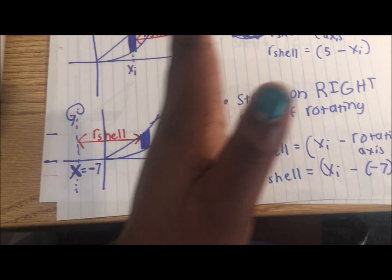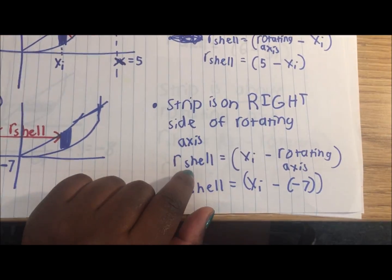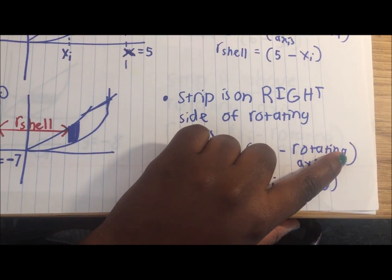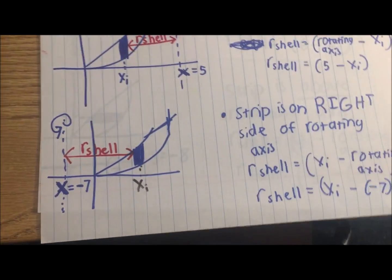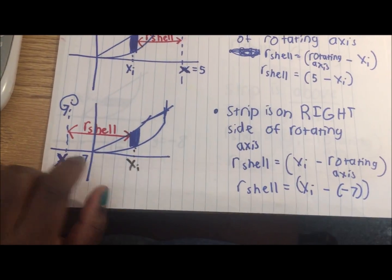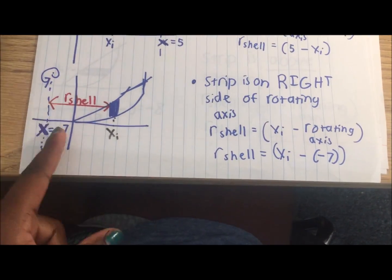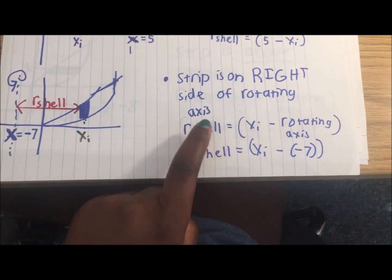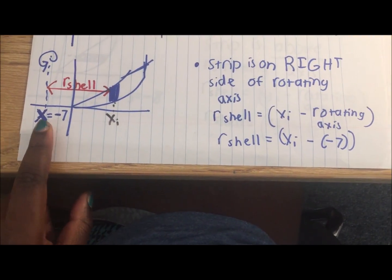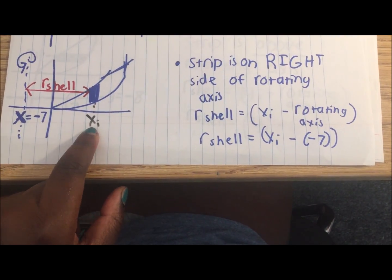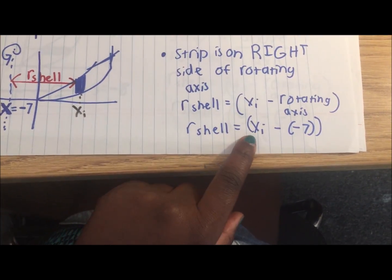Here, the rotating axis is shown and the strip is on the right side of the rotating axis. So in order to find r_shell — the distance between these two — we use the equation xi minus the rotating axis. Xi is just the x component of the strip. The rotating axis is x equals negative 7. So r_shell would be xi minus negative 7.